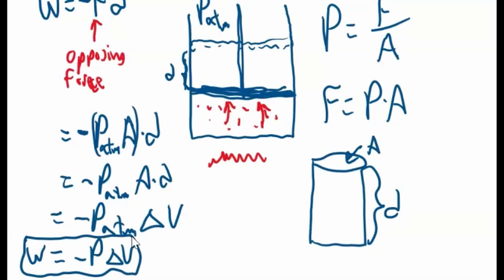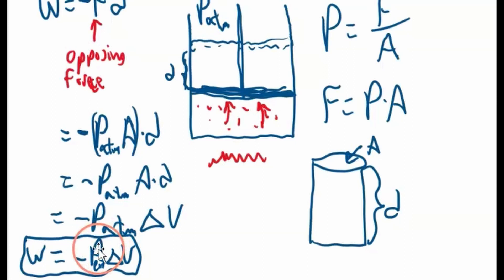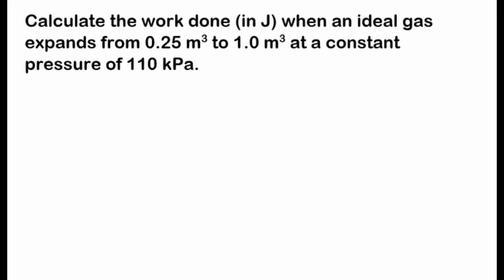Remember, this pressure is the opposing external pressure, not the pressure of the system. So we say it's external. This negative sign must be here because we're opposing it. We don't have negative pressure values we plug in — we use a positive number for the magnitude of pressure, and the negative just shows the sign of the force.